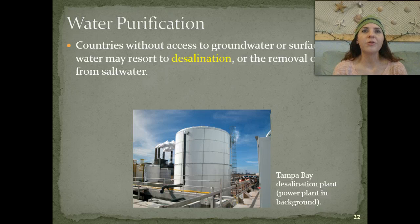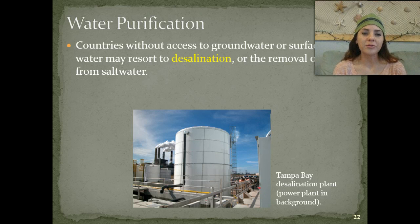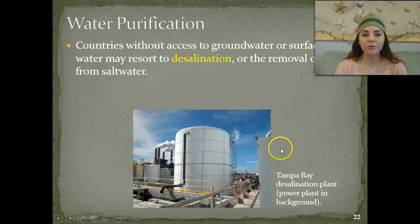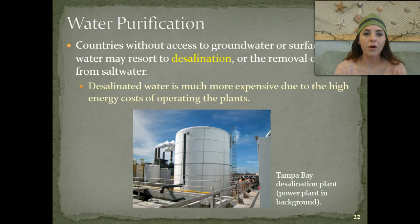So water purification — with all of the water that we need to use, we need to have some way to purify that water and make it drinkable or usable for us. Countries without access to groundwater or surface water sometimes resort to the process of desalination. This is the removal of salt from salt water in order for us to use it as fresh water. This is an example of one of those plants located in Tampa, Florida. Desalinated water is much more expensive due to the high energy costs for operating the plants that remove the salt from that water.